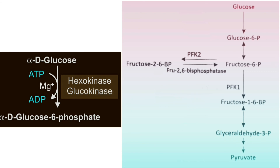So the synthesis and the degradation of fructose-2,6-bisphosphate are both carried out by a single enzyme. Within the polypeptide chain of this enzyme it has two opposing actions — one is synthesis and the other one is degradation. That is why it is called a bifunctional enzyme.